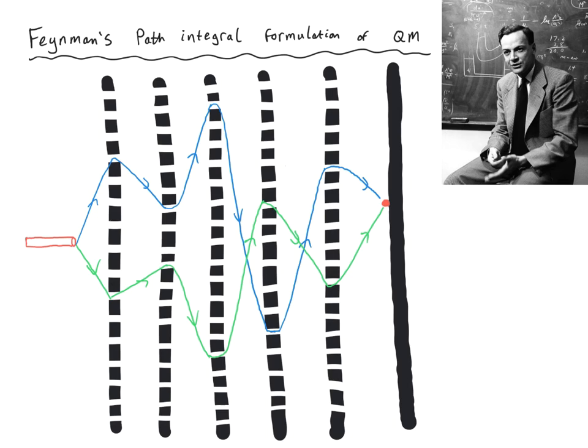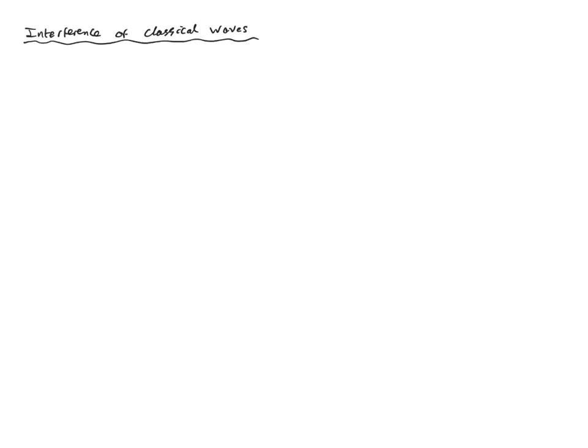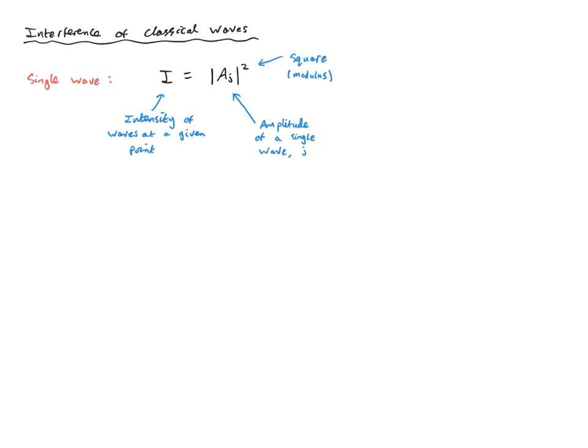But how do they contribute? How do you calculate the amplitude for each path? Surely these totally crazy paths don't really contribute much. Well, Feynman provided the answer to this. Let's first remind ourselves what happens with classical waves. The intensity of a wave arriving at a given point is the square of an amplitude. Here I'm looking at a single wave labeled J — it's the square modulus of the amplitude. If we have multiple waves, the intensity is the square modulus of the total amplitude of all waves at a given point. The total amplitude is the sum of the individual amplitudes for each of the waves J.